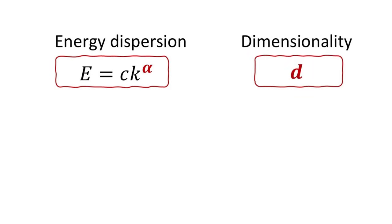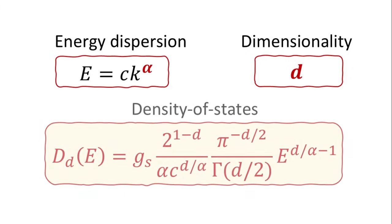The density of states also depends on the material's dimensionality, herein denoted by d. In this video, I will derive the general expression for the density of states, as shown here. We'll then apply this formula to well-known examples, including silicon, graphene, carbon nanotubes, and Dirac semimetals. Let's begin.